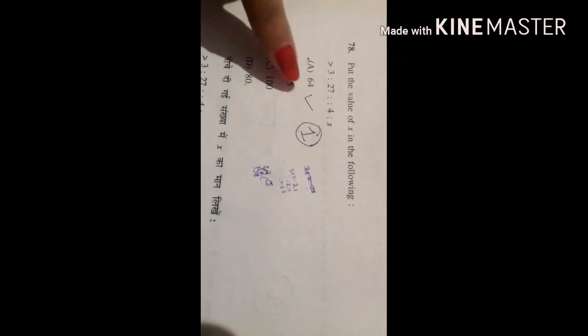In 78th question, we have to find the value of X. So the cube root of 3 is 27 and the cube root of 4 is 64. So option A is the correct option.